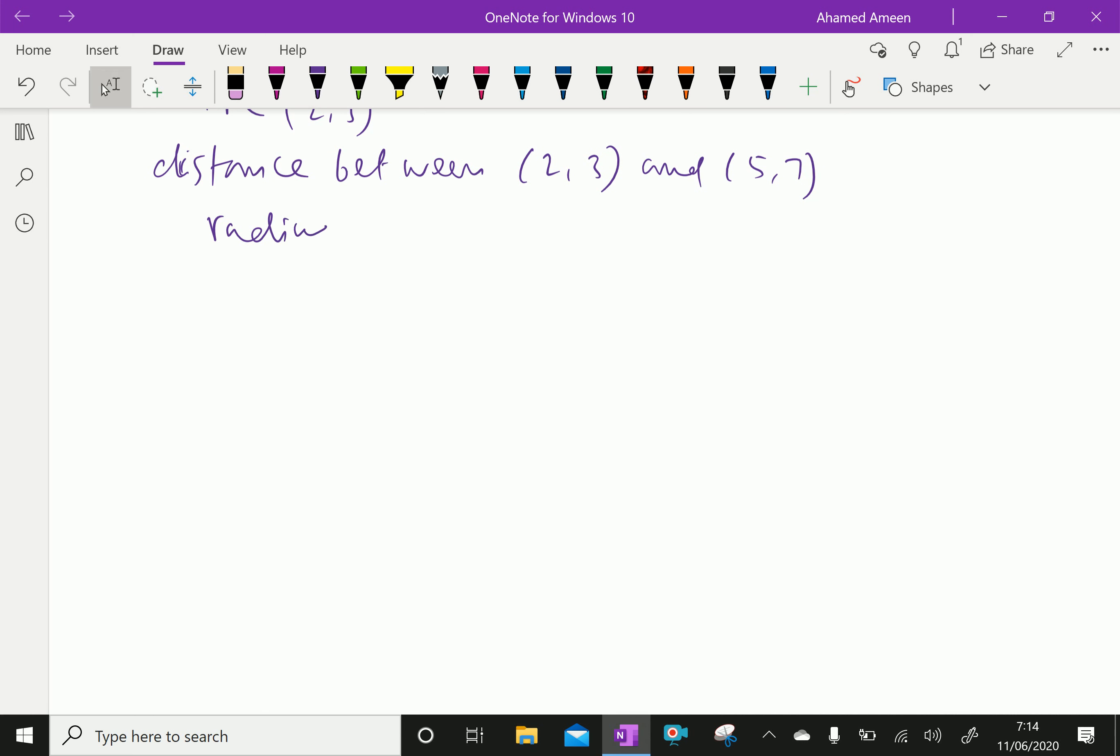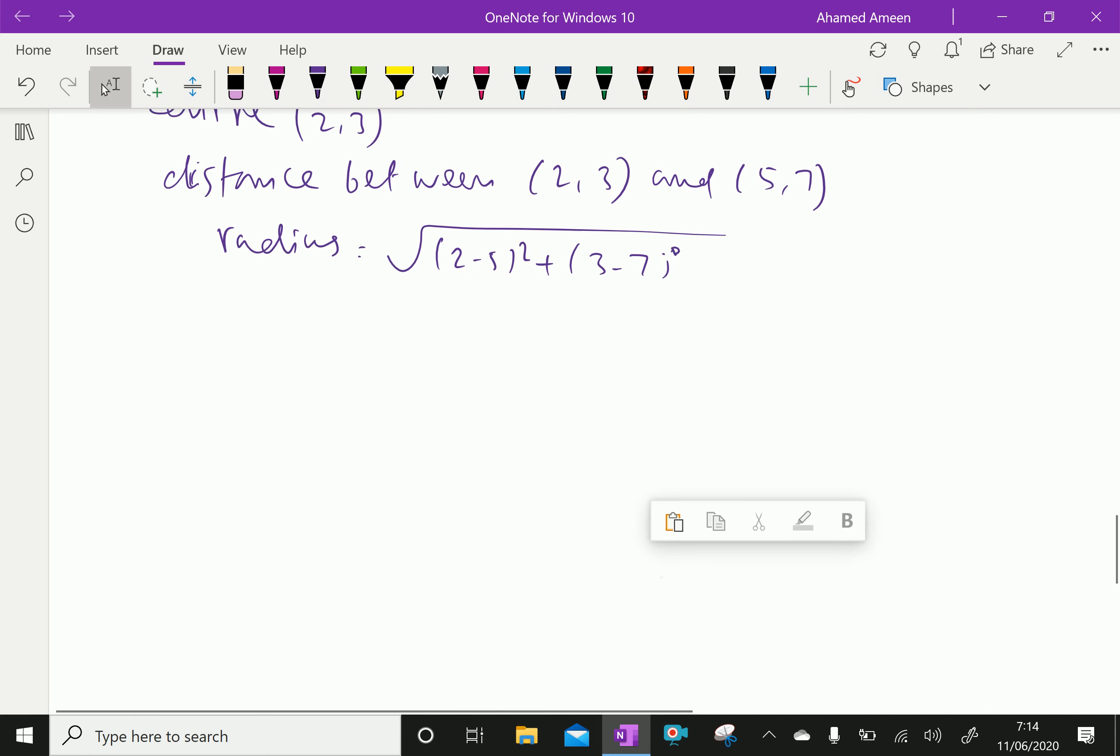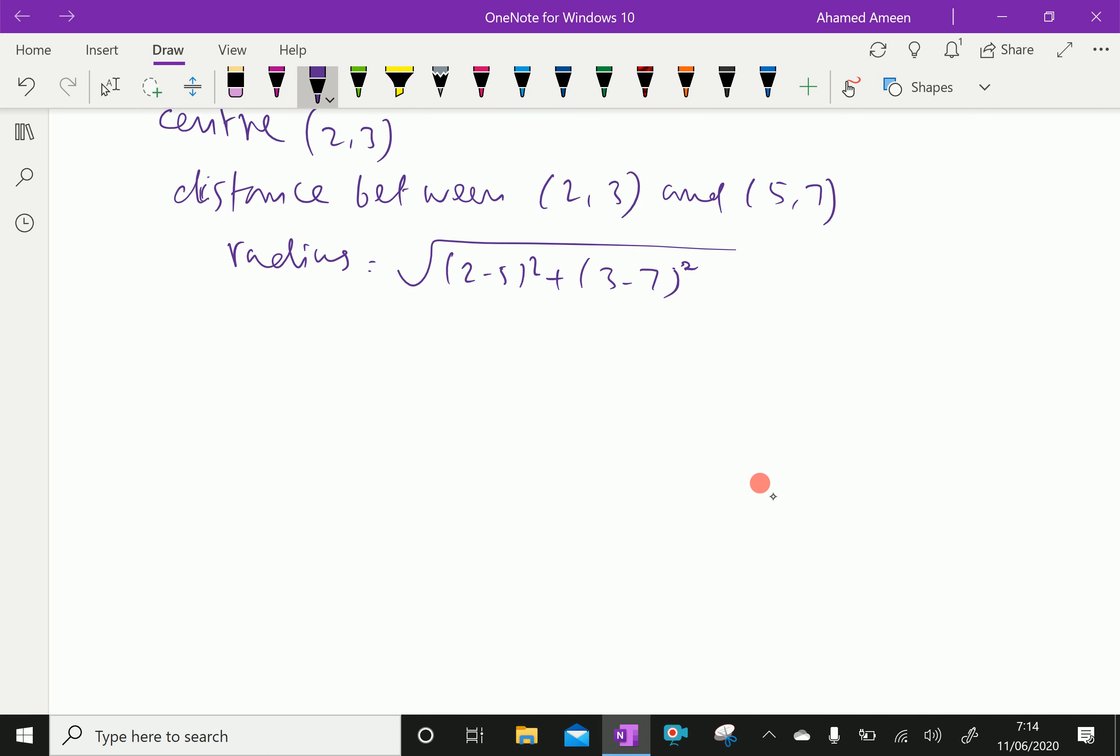The distance between them is radius equal square root of (2 minus 5) squared plus (3 minus 7) squared, which is equal to (minus 3) squared plus (minus 4) squared. Equal to 5 because 9 plus 16 is 25, square root of 25 is 5. Therefore, we got the radius is 5.